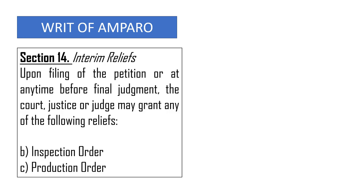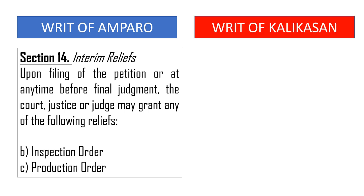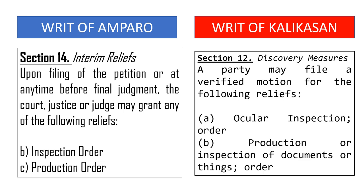As a segue: in the writ of amparo, Section 14 is very clear — justices, judges, and courts are allowed to grant an inspection order or production order upon the filing of the petition or at any time before final judgment. In the writ of kalikasan, you can also avail of inspection orders or production or inspection of documents orders, as long as you file a verified motion.